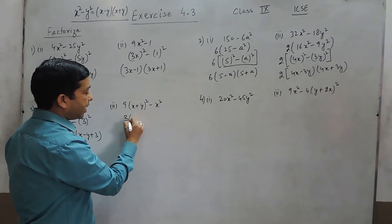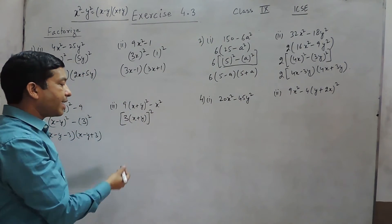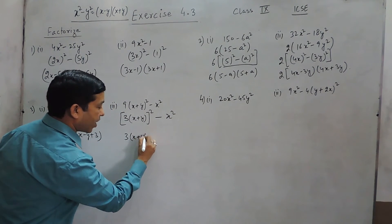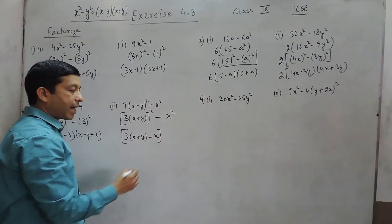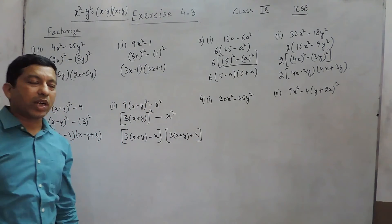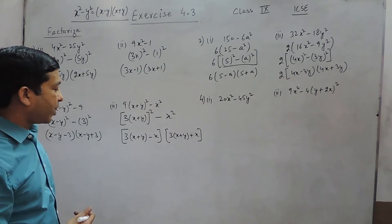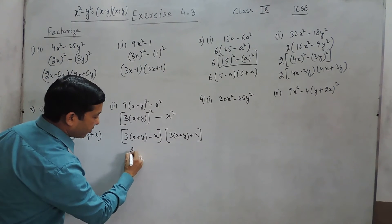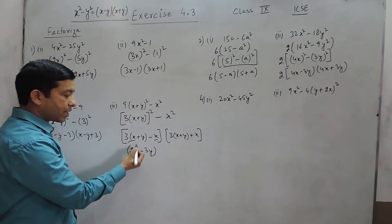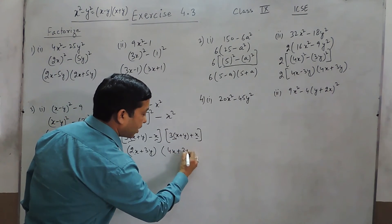Here also we can write it as 3x plus y whole square minus x square, since 9 can be written as 3 square. This can further be written as 3x plus y minus x as one bracket and 3x plus y plus x as another bracket. Since x appears in 2 places we should solve it further. It becomes 2x plus 3y as the first factor, because 3x minus x gives 2x plus 3y, and 4x plus 3y as the second factor.